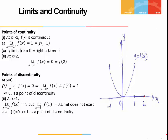Let's check another point for continuity: x = 2. Again, the function is not given on the right side, so we can approach 2 only from the left. The limit as x tends to 2 from the left is 0, and the value of the function at 2 is also 0. So the function is continuous at x = 2.